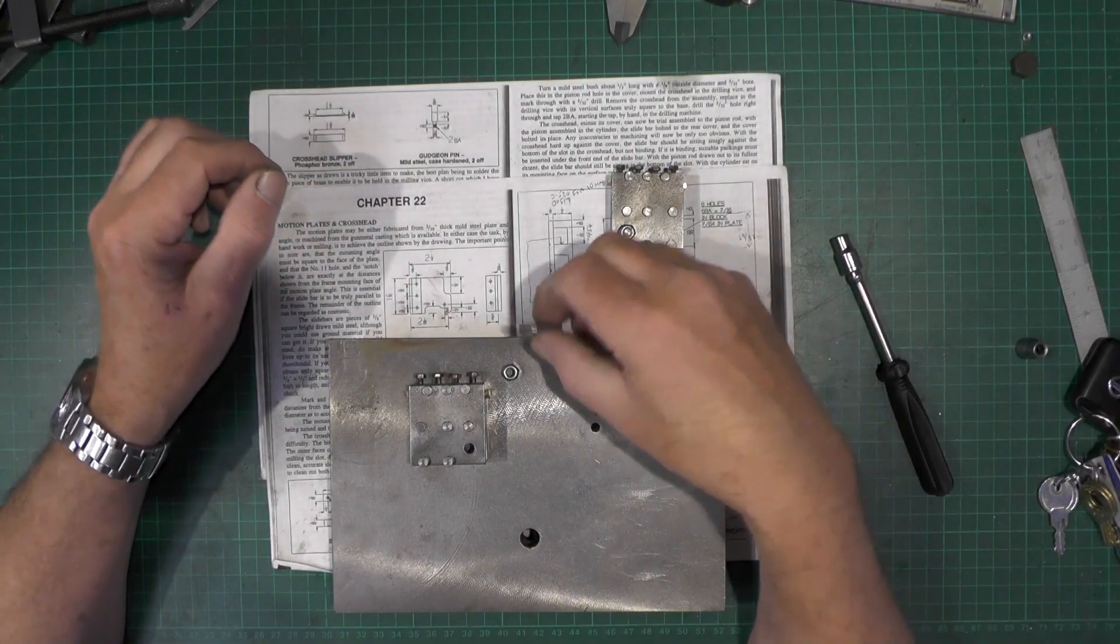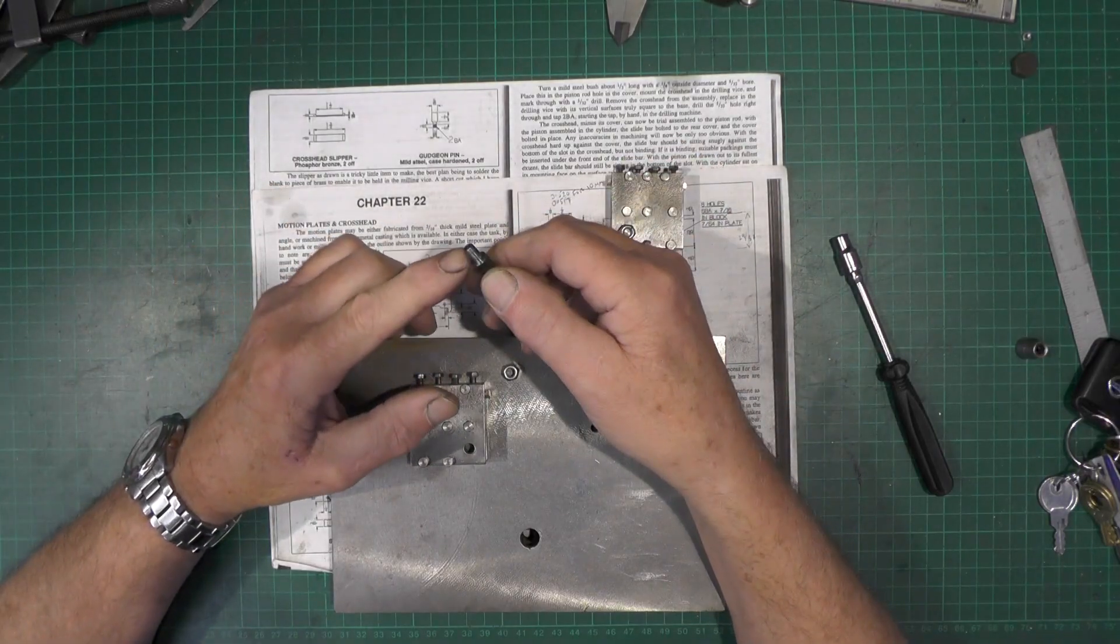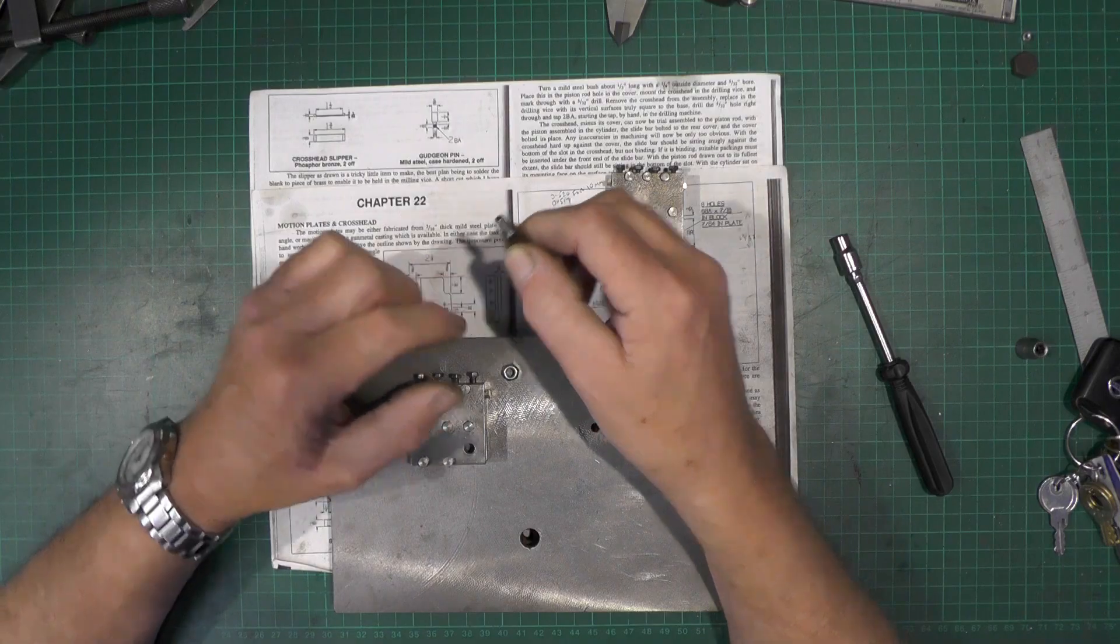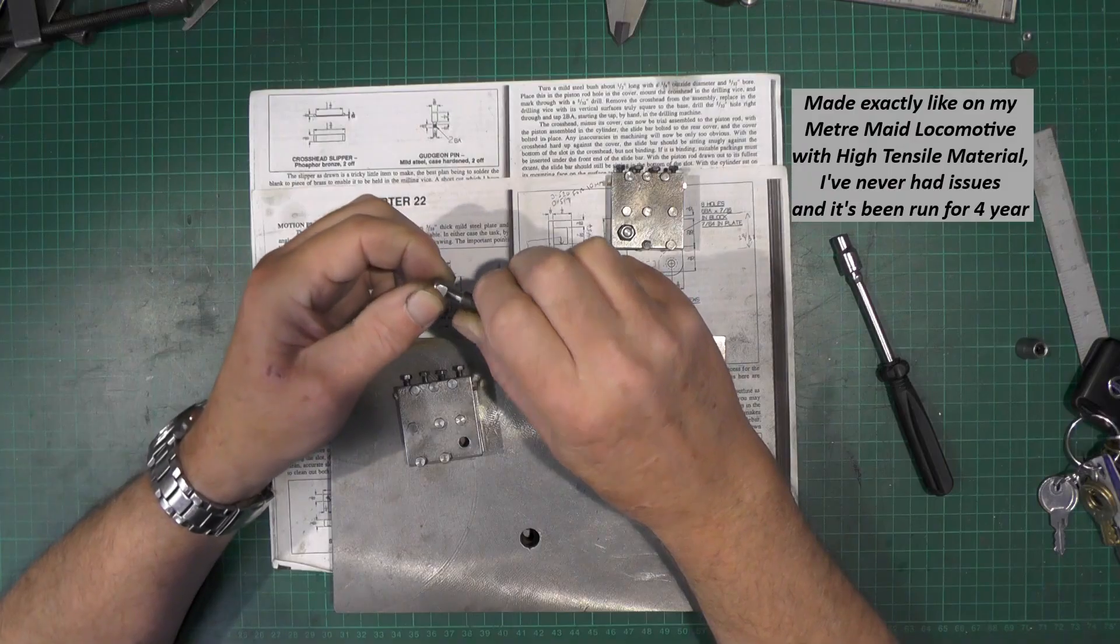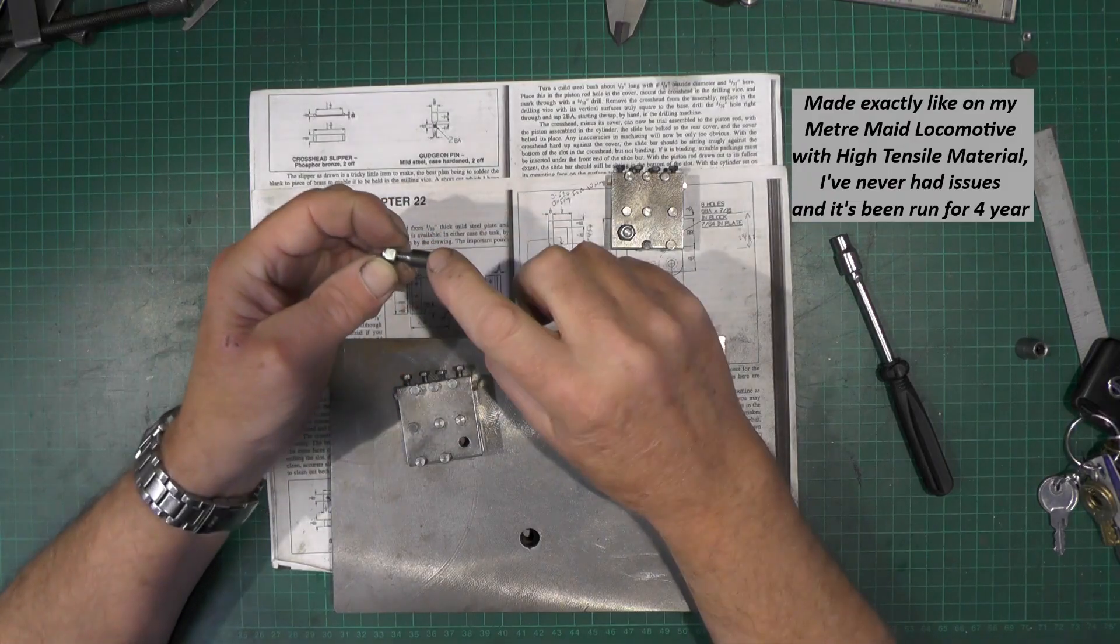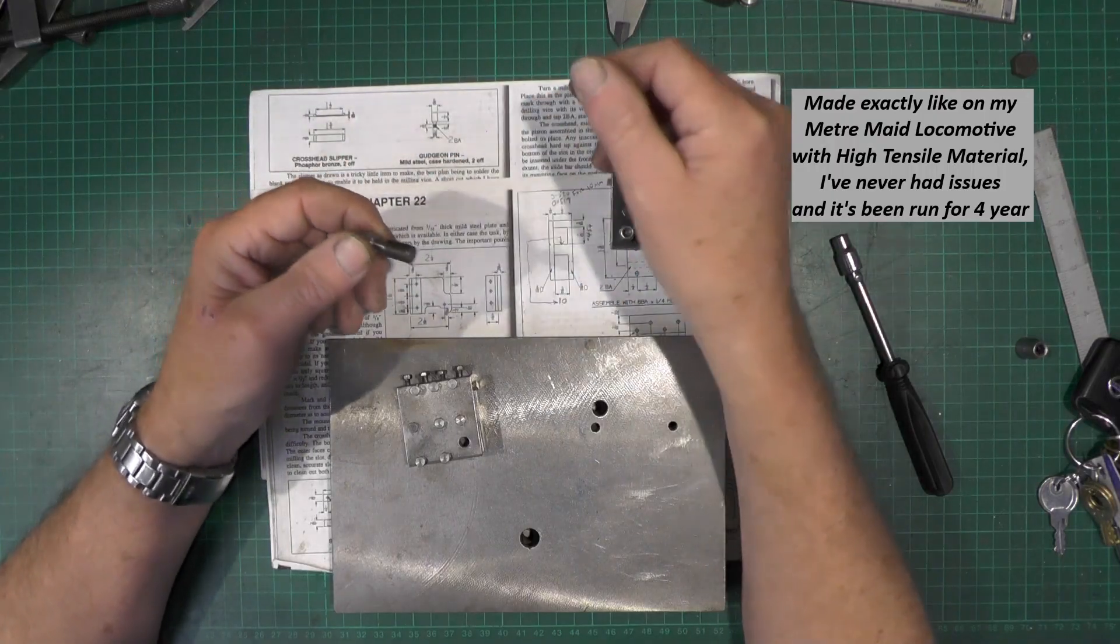And then there's these two pins which I've not shown, it's just a simple turning job with a 2BA thread on for a 2BA nut. 5/16 inch diameter, says to be hardened here but I've just used high tensile material.